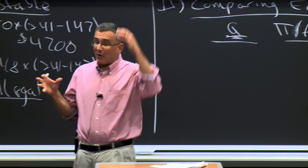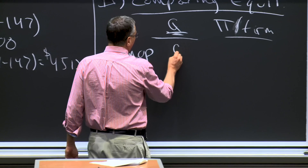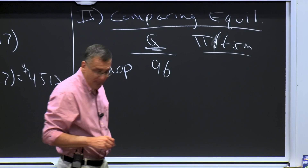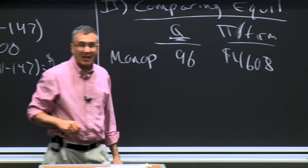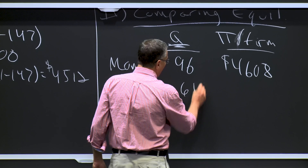We're going to stick with this United-American market. If this is a monopoly — if they can perfectly cartelize — then there'll be 96 flights total. Each will fly 48 flights, and profits per firm will be $4,608. That's the cartel outcome. The non-cooperative oligopoly outcome is they each sell 64 flights — we solved that last time — and they each make profits of $4,096.